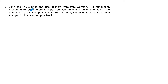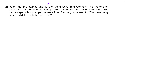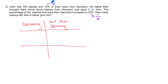Question 2. John had 140 stamps and 10% of them were from Germany. His father then brought back some more stamps from Germany and gave them to John. The percentage of his stamps from Germany increased to 25%. How many stamps did John's father give him? First step, let's change all the percentage values to fractions. For 10%, that's 1 out of 10, and for 25%, that's 1 out of 4. I'm going to use a ratio table to solve this question. At the beginning, 1 out of the total 10 units of stamps is from Germany.